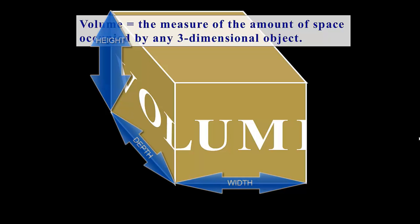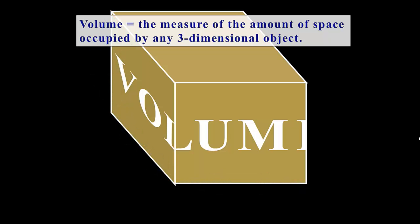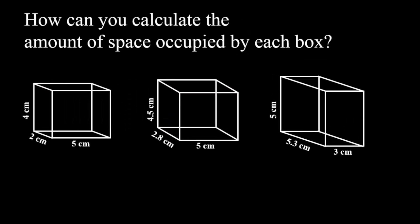It doesn't have to be a regular shape like a box — it can be anything that has space within it. And the space doesn't have to be empty; it can be occupied by anything. So if it's a regular shape, we can simply calculate the space occupied by a box by measuring each side. Here we have three examples.